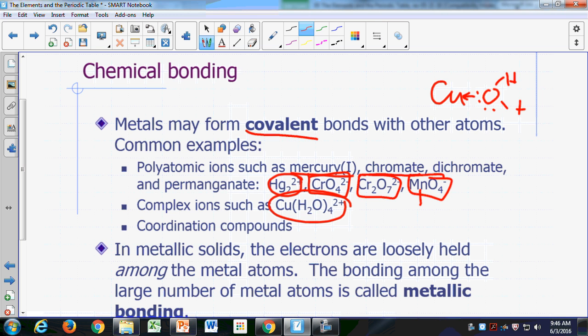Each of those water molecules is actually sharing a lone pair. Instead of having two lone pairs, one of the lone pairs on the water molecule is actually shared with the copper. So you got four of those around the copper, that's called a complex ion. This is called a coordination complex.